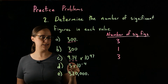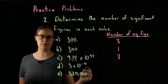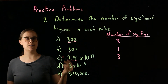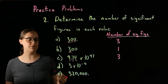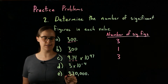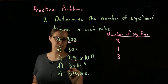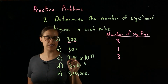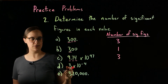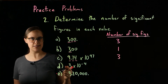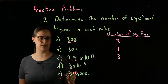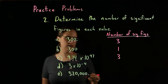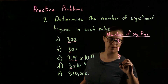Problem D: 3 times 10 to the minus 4. This is once again a value in scientific notation. We are only looking at the coefficient. This 3 is significant, so we have one significant figure.